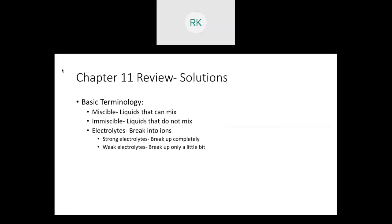Electrolytes break into their component ions — NaCl breaks into Na⁺ and Cl⁻. Strong electrolytes break up completely, weak electrolytes only partially, analogous to strong and weak acids and bases. The Van't Hoff factor, denoted I, tells you how many ions result. NaCl gives two ions, so I equals two. For weak electrolytes, we don't assume complete dissociation unless solving for I — and I can be a decimal in that case.